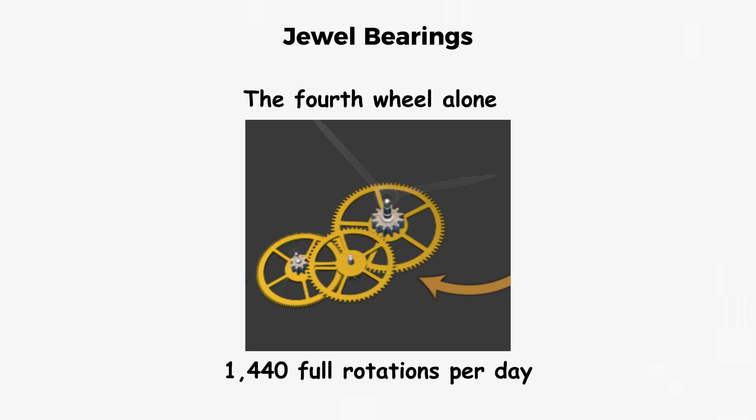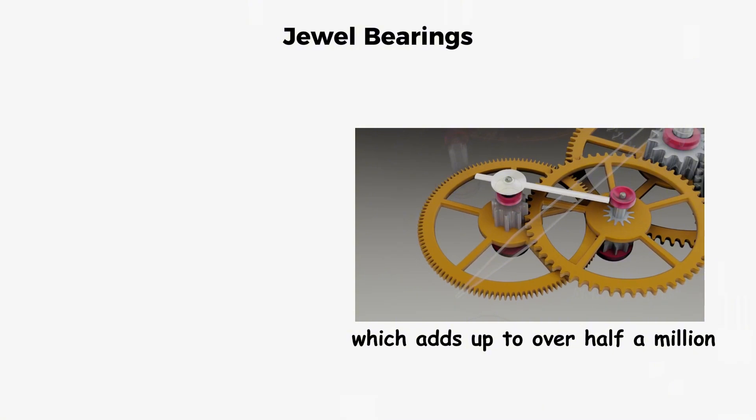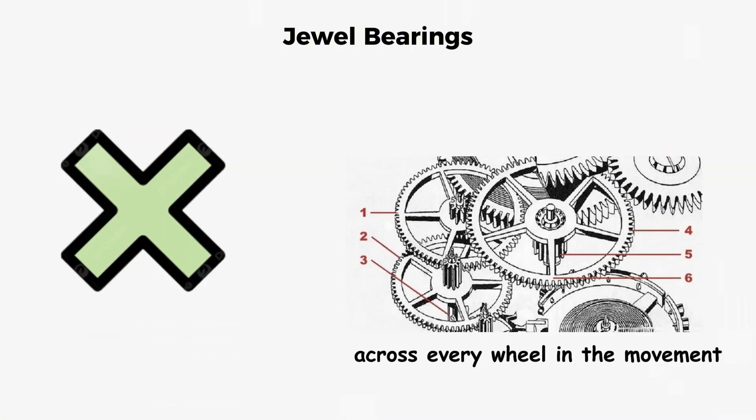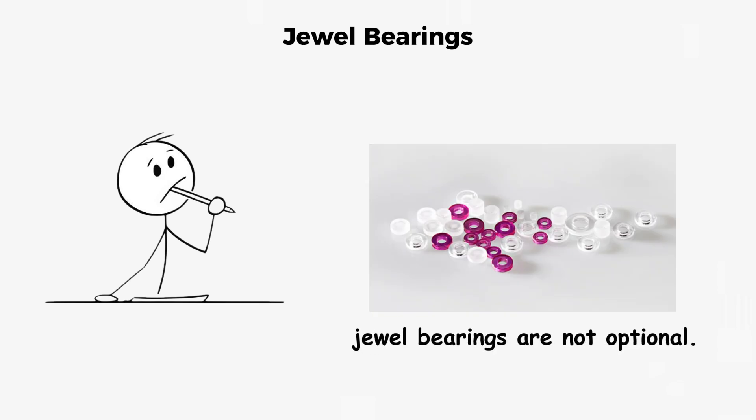but when a wheel is completing hundreds of thousands of rotations per year, it becomes the difference between a watch that keeps time and a watch that becomes a paperweight. The fourth wheel alone makes 1,440 full rotations per day, which adds up to over half a million rotations per year. Multiply that across every wheel in the movement, and you start to understand why jewel bearings are not optional.